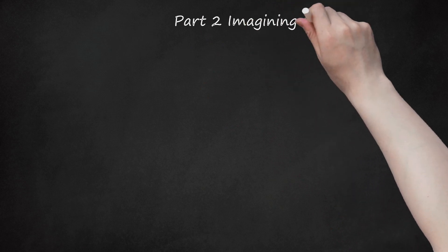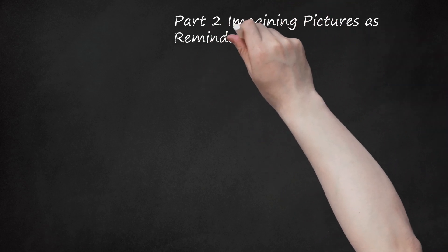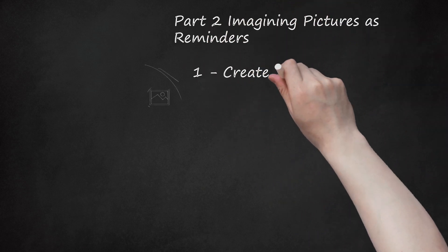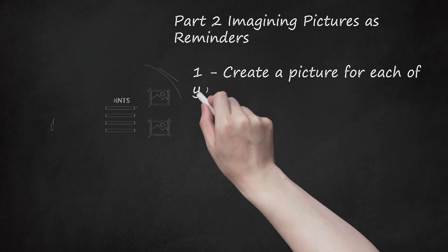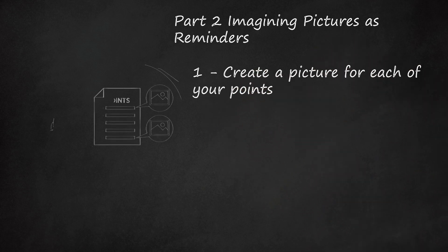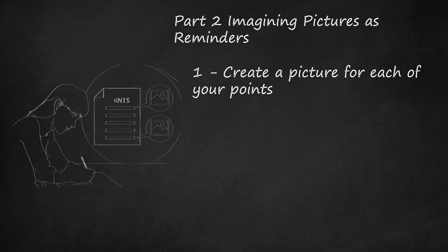Part 2: Imagining Pictures as Reminders. First, create a picture for each of your points. Use your imagination to produce images for each point in your speech. This is the time to really be creative and think outside the box. Close your eyes and form whatever picture comes to mind for each bit of information. If your point is about a particular animal, such as a tiger, visualize a tiger for that point.